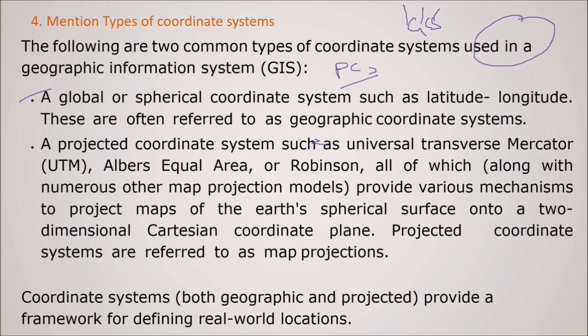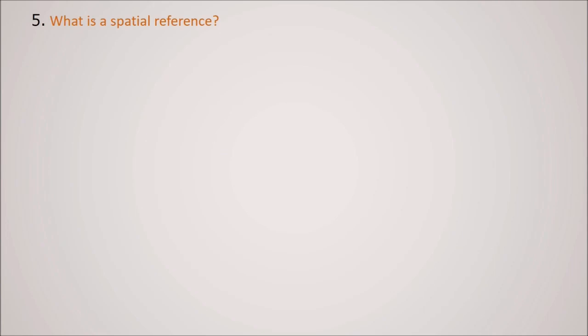This PCS, like your UTM - Universal Transverse Mercator, Albers, equal area or Robinson. All of which, along with the numerous other map projection models, provide various mechanisms to project maps of the earth's spherical surface onto a Cartesian coordinate plane. So projected coordinate systems are referred to as the map projections. And coordinate systems provide a framework for defining the real world location, both geographic and projected.